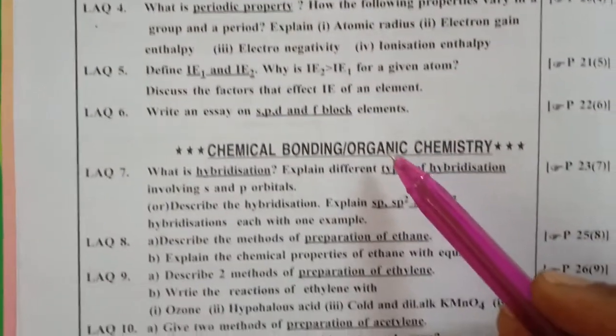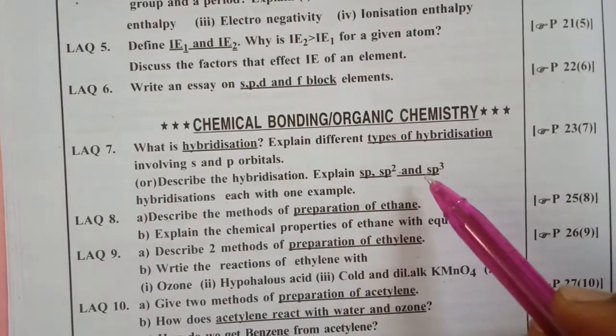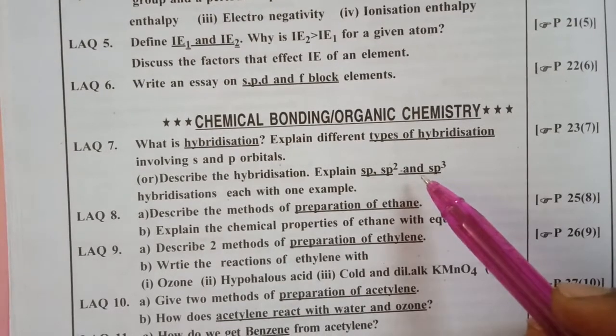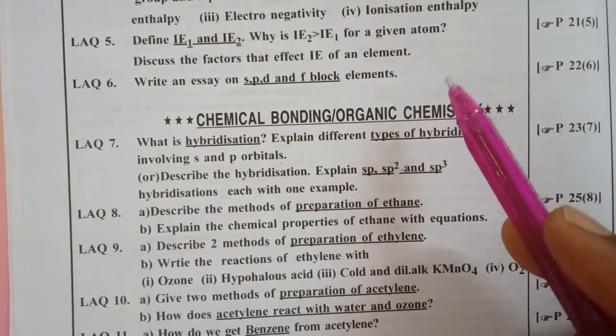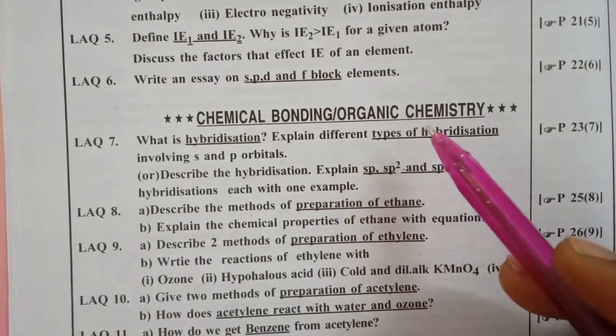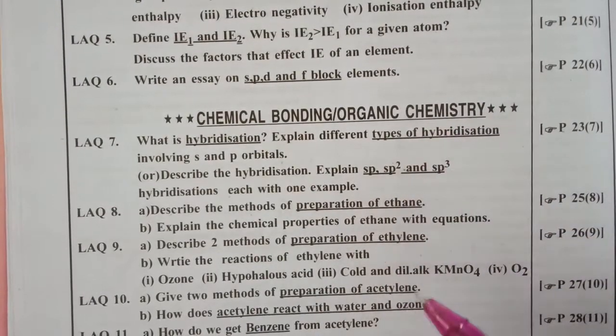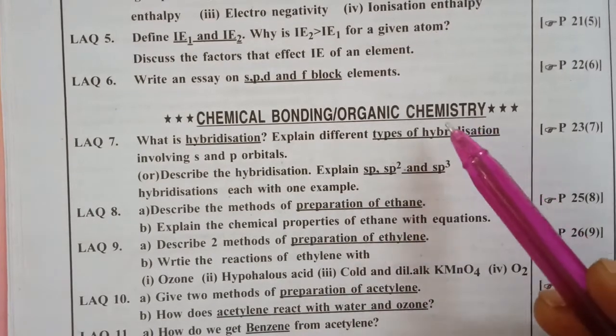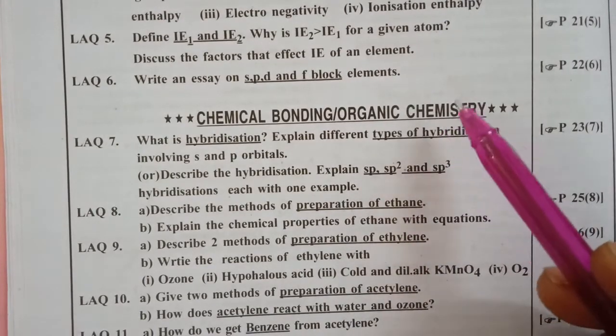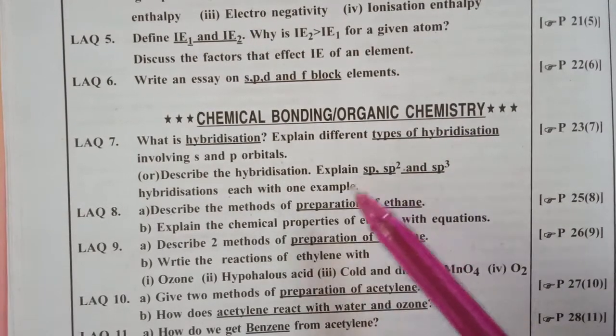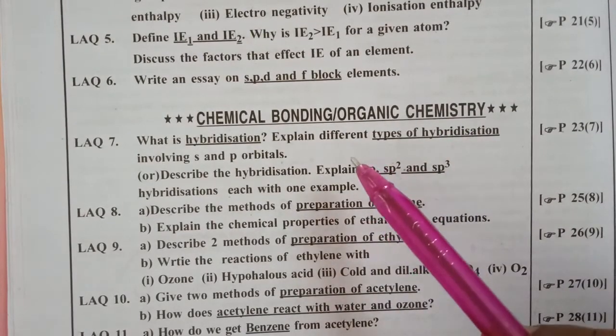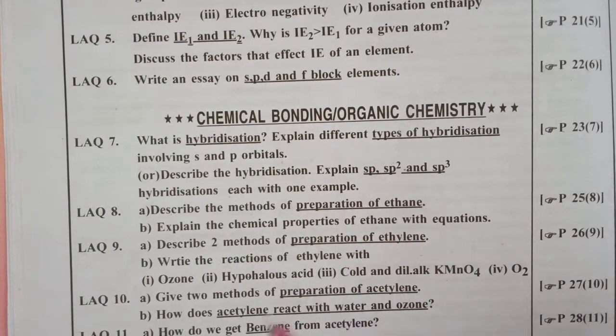Next is chemical bonding or organic chemistry. Many people choose this. Atomic structure and classification of elements are there, but organic chemistry requires skill and practice. In the future, if we study B.Sc. chemistry, the basics are very important in intermediate. So I request everybody,